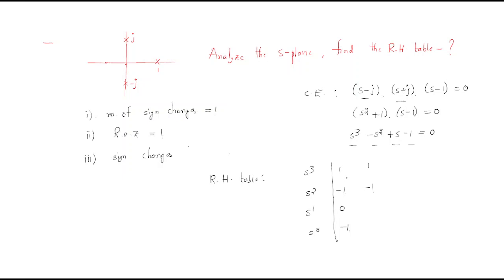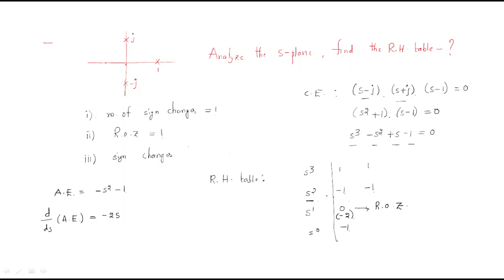Wherever we have a row of zeros, we write the auxiliary equation from the row above it. The auxiliary equation is −s² − 1. Differentiating this auxiliary equation gives −2s, so we replace the row of zeros with −2 in the s¹ row, and −1 carries forward.